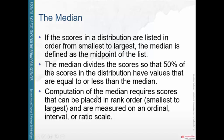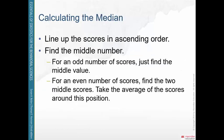To compute the median, you place your scores in rank order from smallest to largest and then find the middle number. Because you have to place numbers on a scale from small to large, you must have numeric data — your data have to be at least on an ordinal, interval, or ratio scale. You cannot find the median of nominal data.